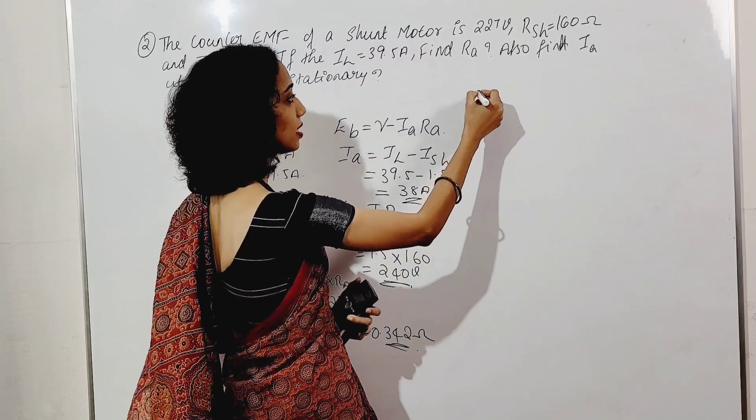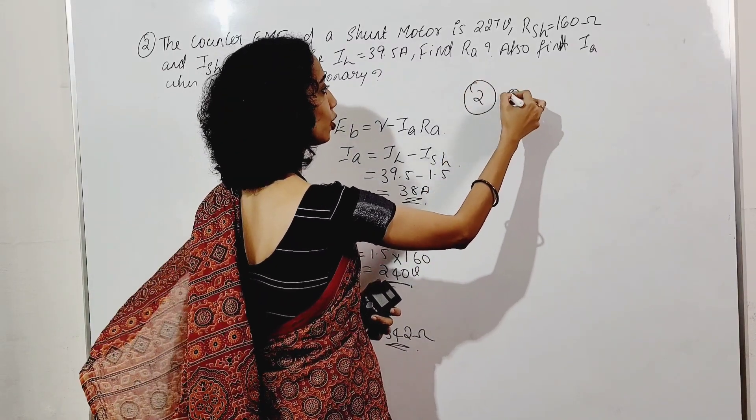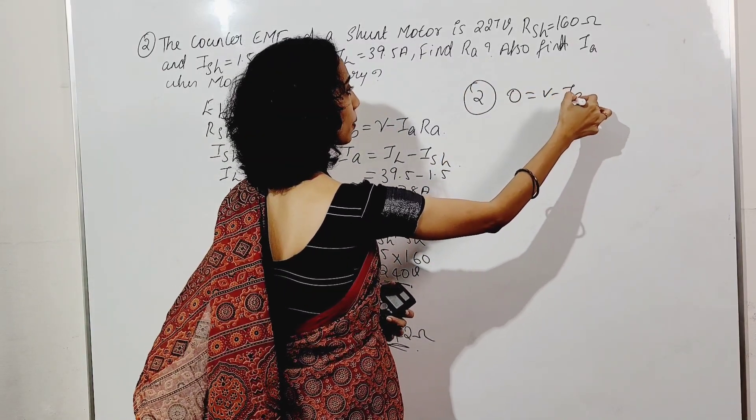Under stationary condition, EB equals zero. So the equation becomes 0 is equal to V minus IA*RA.